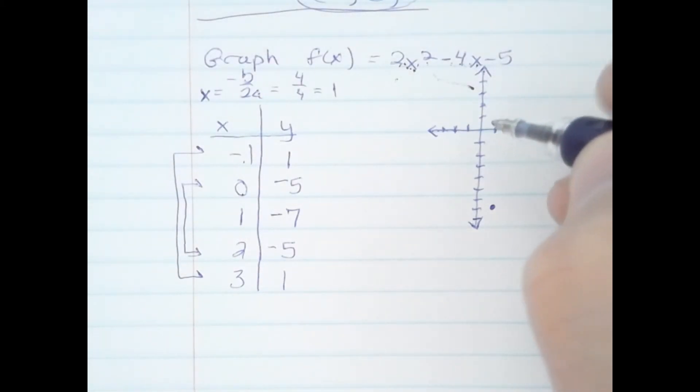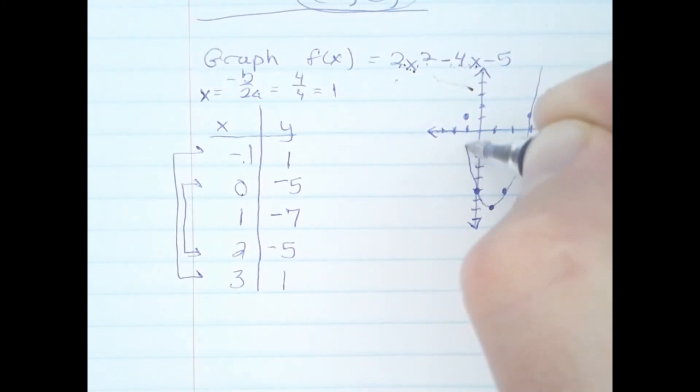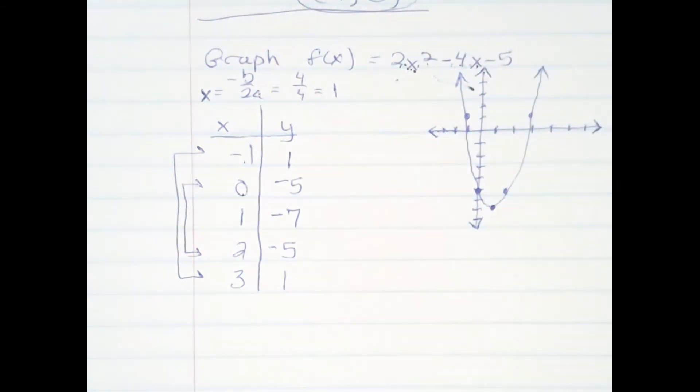Let's plot the rest of the values. 0, -5; 2, -5; -1, 1; and right 3, up 1. And then I have a sketch of the graph of this quadratic using 5 points.